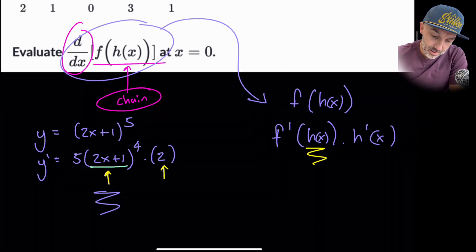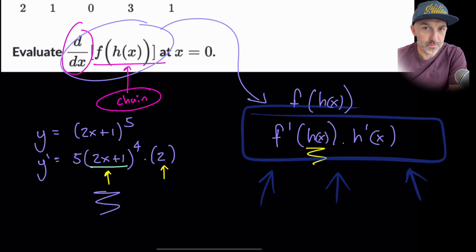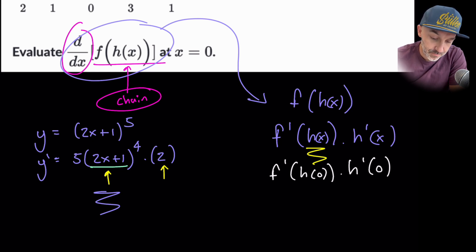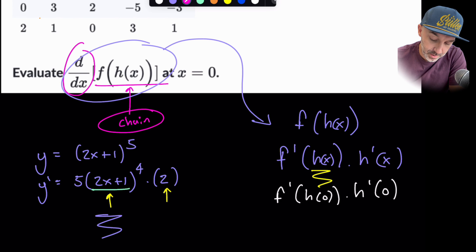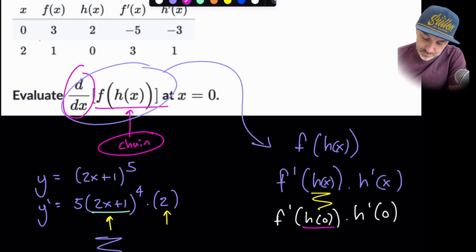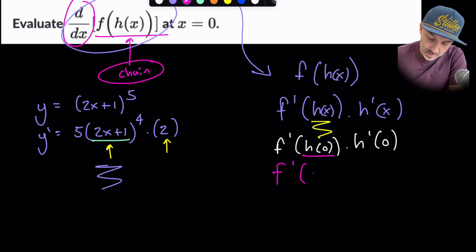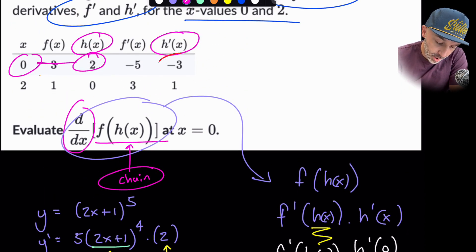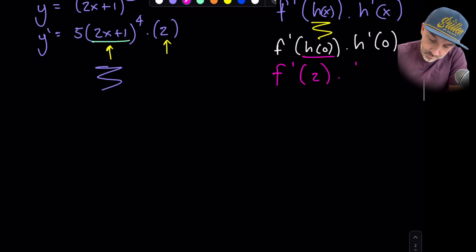Now those things there on the right, we're going to start to substitute the value 0 into that because that's where it wants us to find. So we have to find the following, f prime h of 0 times h prime of 0. So all we're going to do is go up to the table and we're going to locate all of these values that we need. So I'm going to use a different colour here, let's try pink. So we're looking for h of 0. So h of 0, here's h, here's 0, cross-reference 2. So that is f prime of 2 times by h prime of 0. So let's go and find h prime. h prime of 0 is minus 3. That's minus 3.